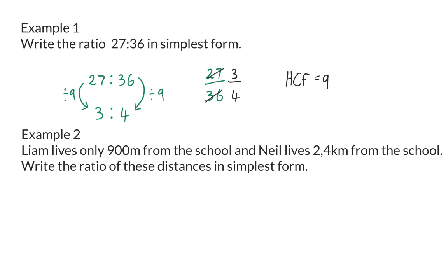Example 2. Liam lives only 900 meters from the school and Neil lives 2.4 kilometers from the school. Write the ratio of these distances in simplest form. As mentioned earlier, a ratio compares two values with the same unit.